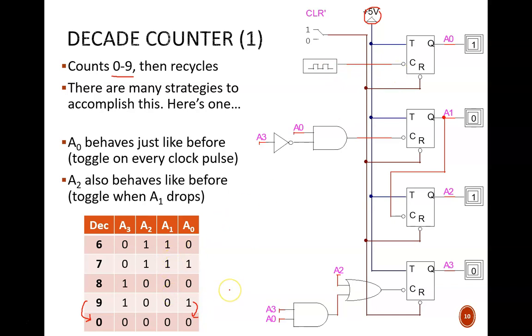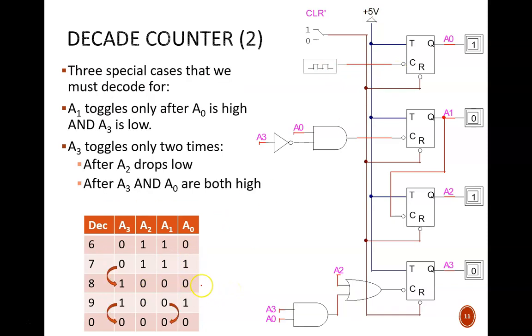But A1 shows a new behavior. At all other points, A1 toggles when A0 drops high to low. For example, in this change from 7 to 8. But when recycling from 9 to 0, A0 does drop high to low, and A1 remains the same.